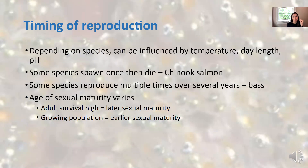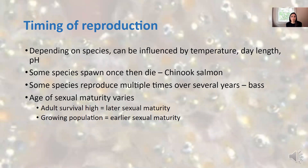Salmon go upstream to spawn, which takes a ton of energy. So they don't spawn until around seven or eight years old - they build up lots of energy and resources so they can lay or fertilize lots of eggs all at one time. That's the adaptation that worked best over evolutionary time for that species. Other species, like bass, reproduce multiple times over several years. The age of sexual maturity varies: species with high adult survival rates have later sexual maturity, while those with lower adult survival and growing populations reach sexual maturity earlier.